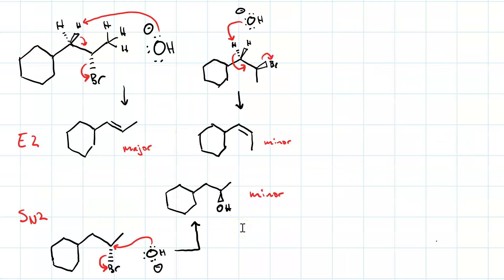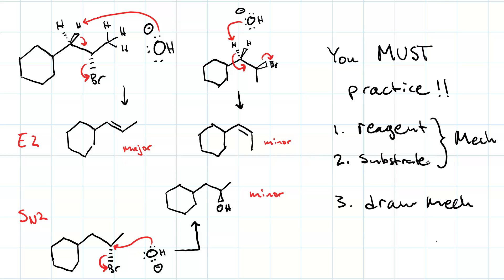This may seem complicated, but you can achieve it with practice. Practice is essential. First ask yourself, is the reagent a base or a nucleophile? Is it strong or weak? Then ask yourself about the substrate. Does its degree of substitution say anything about the mechanism? Once you've got the mechanism, draw the mechanism. And if you follow the steps correctly, you will figure out the correct outcomes.